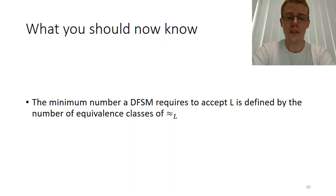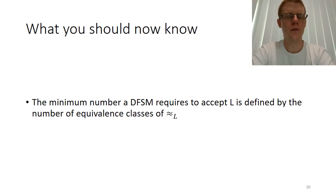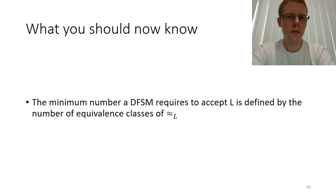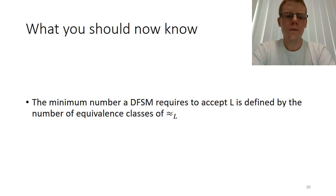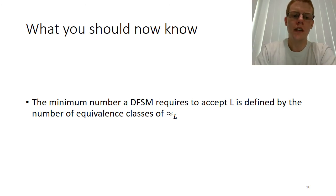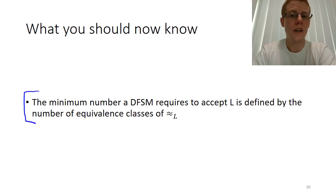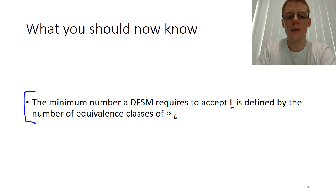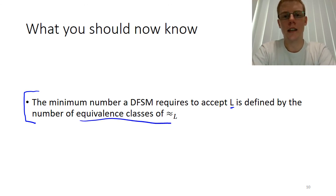I know this video has been very long, but this concept will make it much easier to understand and remember the MinDFSM algorithm, because you can look at the algorithm as building up equivalence classes of states and see how that corresponds to what we need to accept a particular language. The key takeaway is that the minimum number of states needed for a DFSM to accept a language L is defined by the number of equivalence classes in that language.